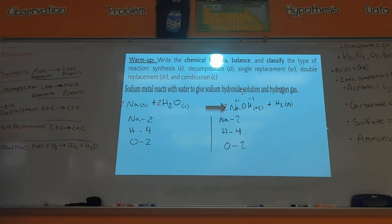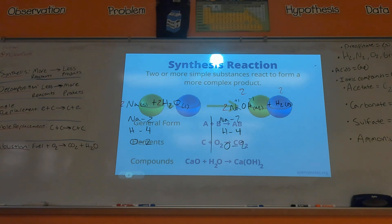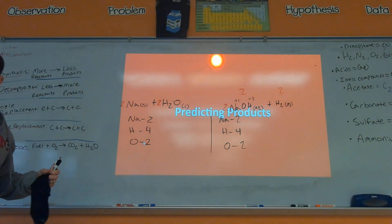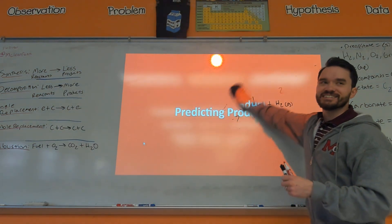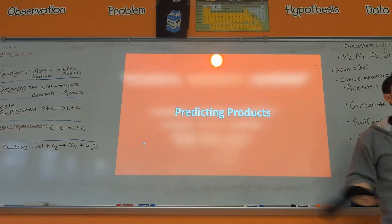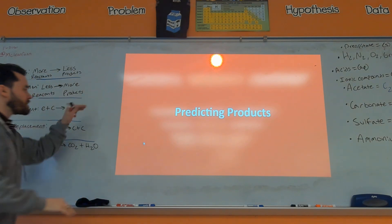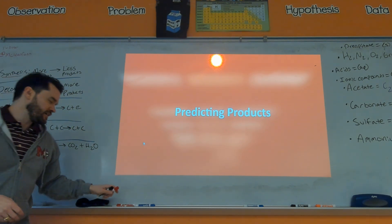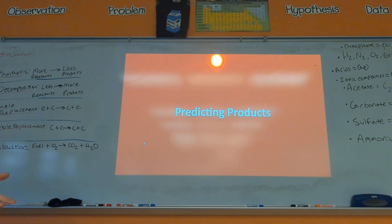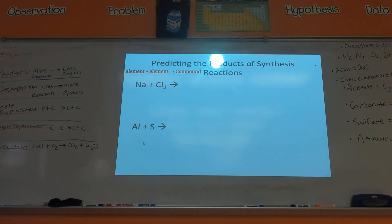Now we're doing predicting products. I think this is kind of cool because it's really getting into what a real chemist does — you're actually seeing how, if I want to make these products, which reactants do I bring together? Like if you're a cook and you want to make something, what ingredients do you need? We're going to use those five reactions we learned about last class.